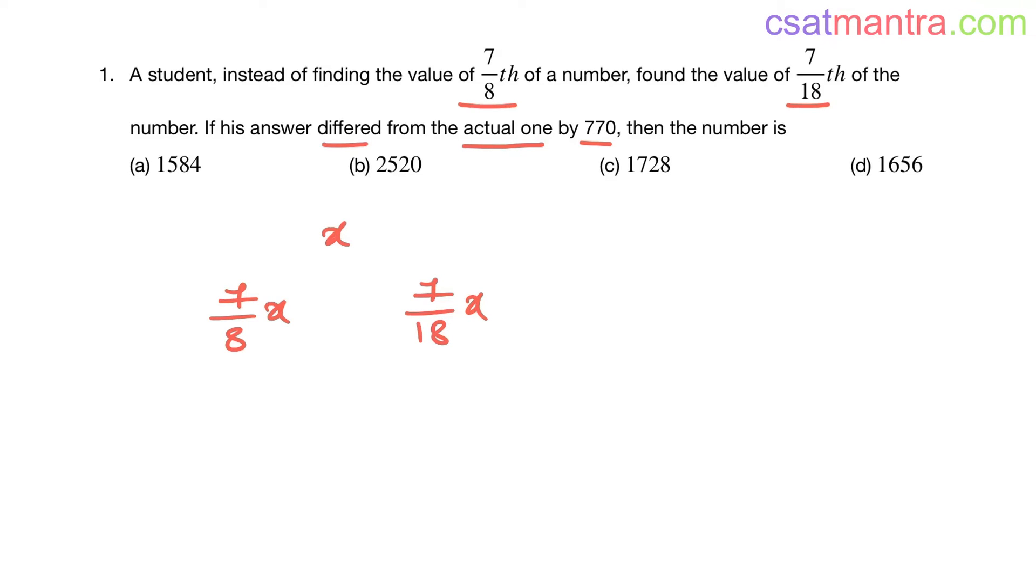Now tell me which one is greater. Seven by eight is the greater, my friends, because here the denominator is lesser, here the denominator is greater, and our numerators are equal. So 7/8 x is greater than 7/18 x.